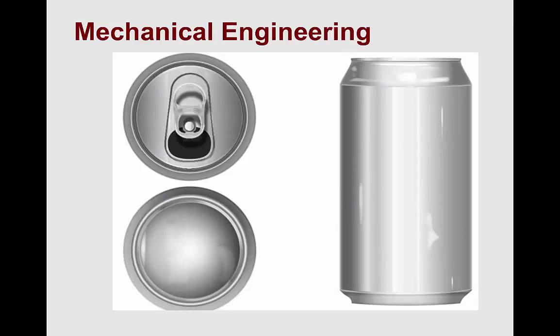I'm going to use some PowerPoint slides to illustrate how the different types of engineers are involved in the development of the can as we use it today. We already talked about mechanical engineers and what a great role they play. This illustration of the can shows a side view, a top view, and a bottom view. This is a very typical way a three-dimensional object is described in a two-dimensional drawing — you can get all the information you need from these three views.